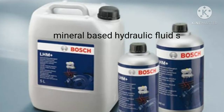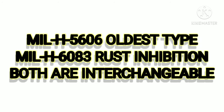The first type is mineral-based fluids. Mineral oil-based hydraulic fluid specification MIL-H-5606 is the oldest type of hydraulic fluid and is used in many systems where fire hazard is comparatively low. MIL-H-6083 is a rust-inhibited version of MIL-H-5606, meaning MIL-H-6083 does not form rust but MIL-H-5606 does. Except for this difference, MIL-H-6083 and MIL-H-5606 are completely interchangeable.